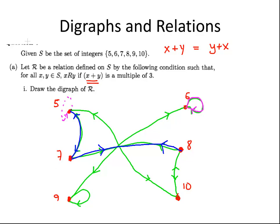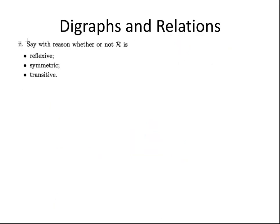Just because one vertex is related to 7, and another vertex is related to 7, doesn't mean those two vertices are related to each other. So it is not transitive. So reflexive, no. Symmetric, yes. Transitive, no.